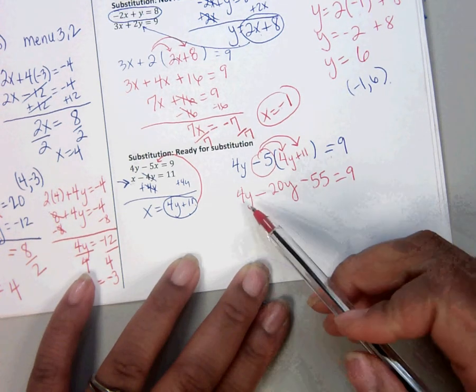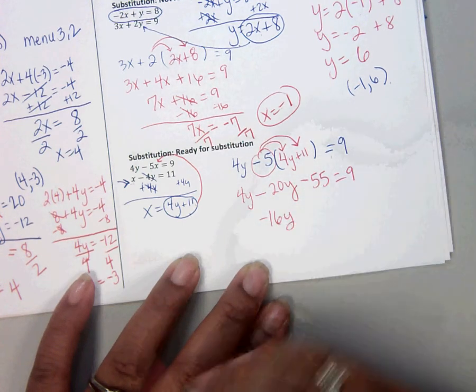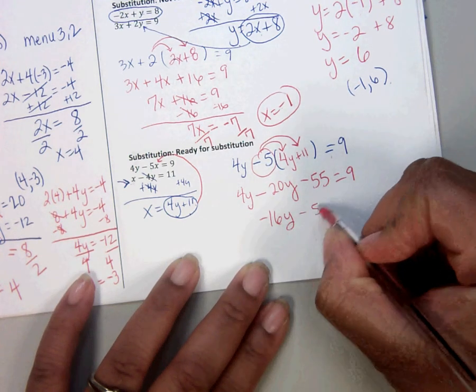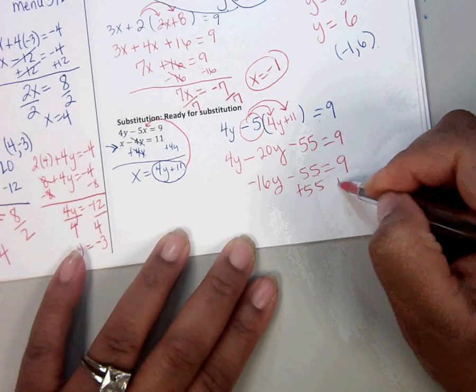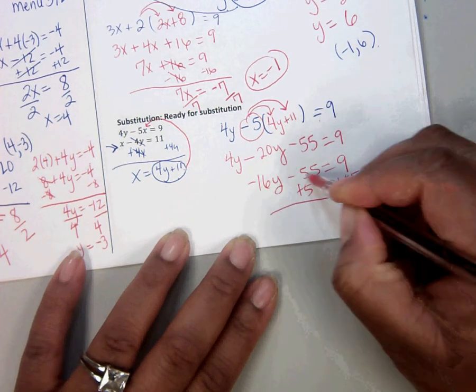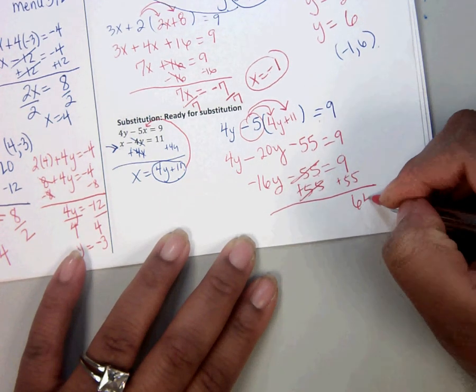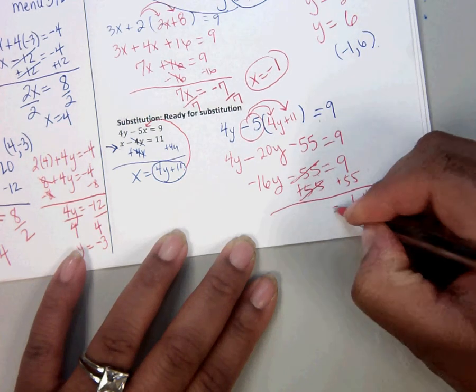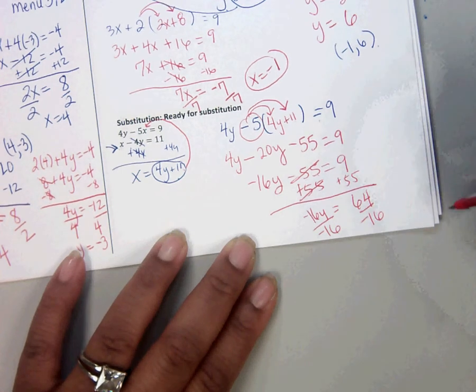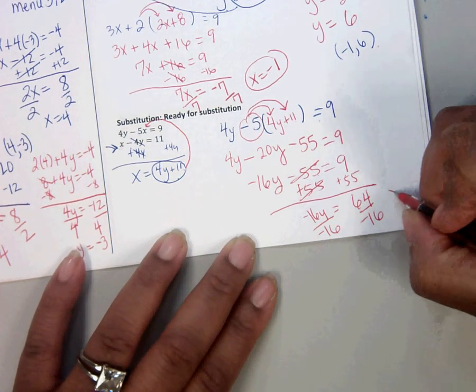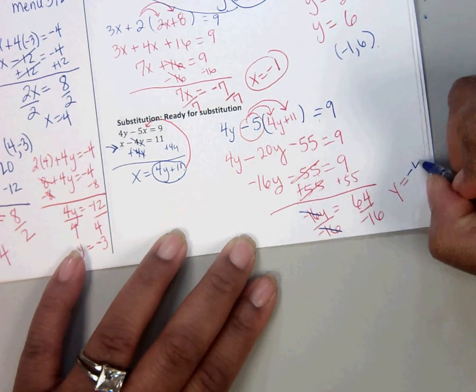Now we combine like terms. 4 minus 20, that's negative 16. Add 55 to both sides. And we get 64. Divide by negative 16. Cancel, cancel. We get negative 4.